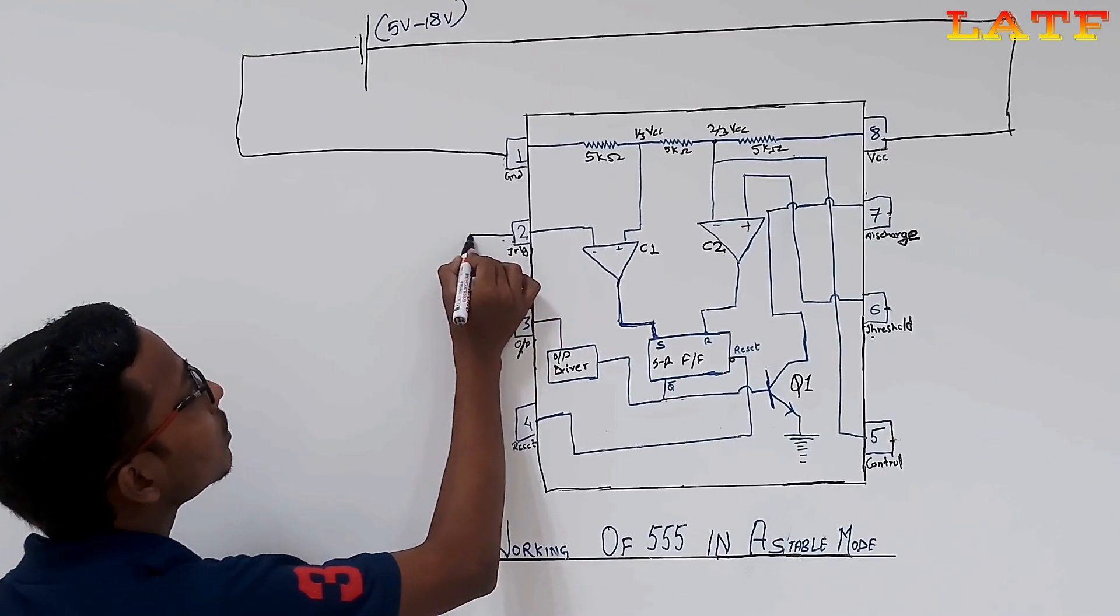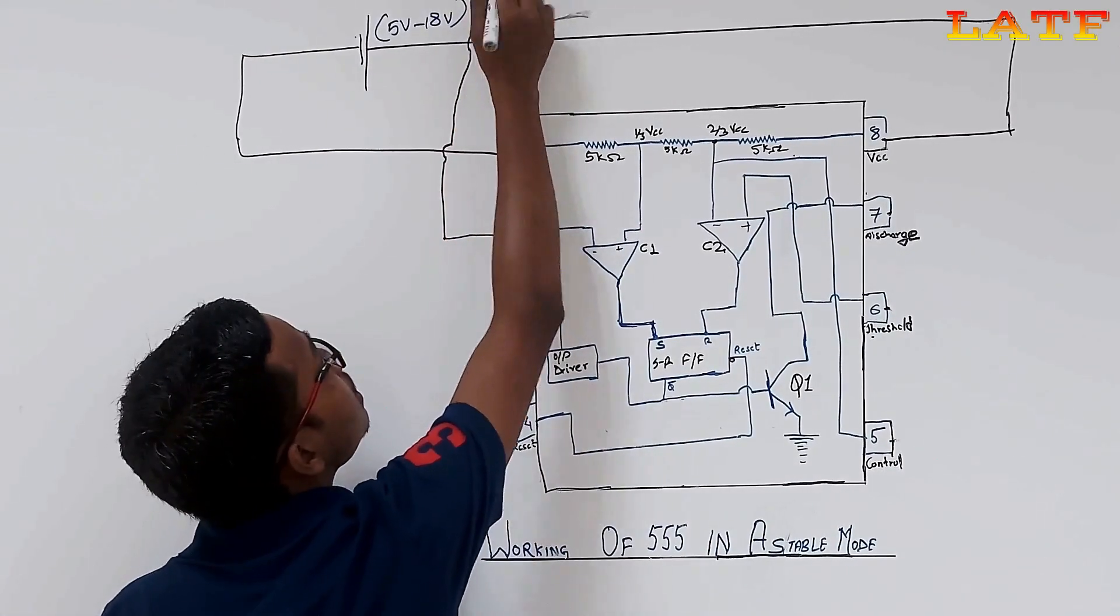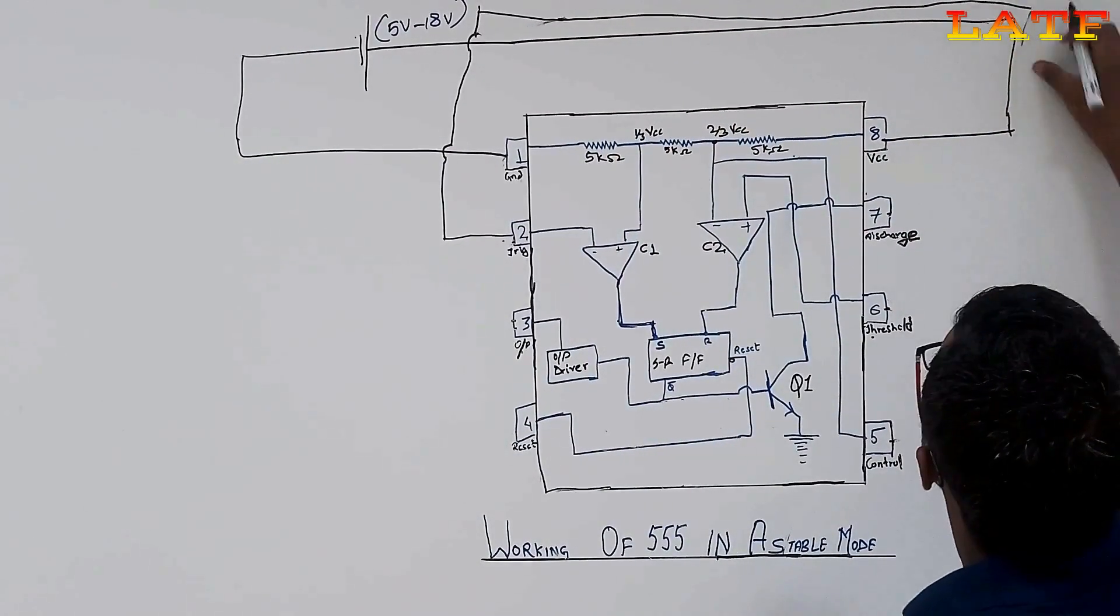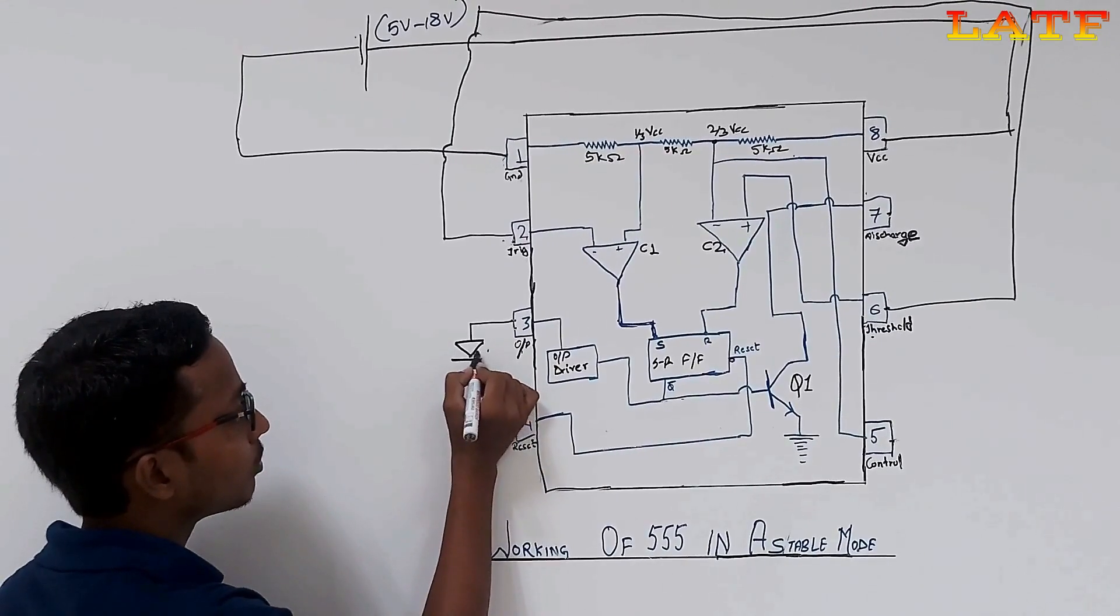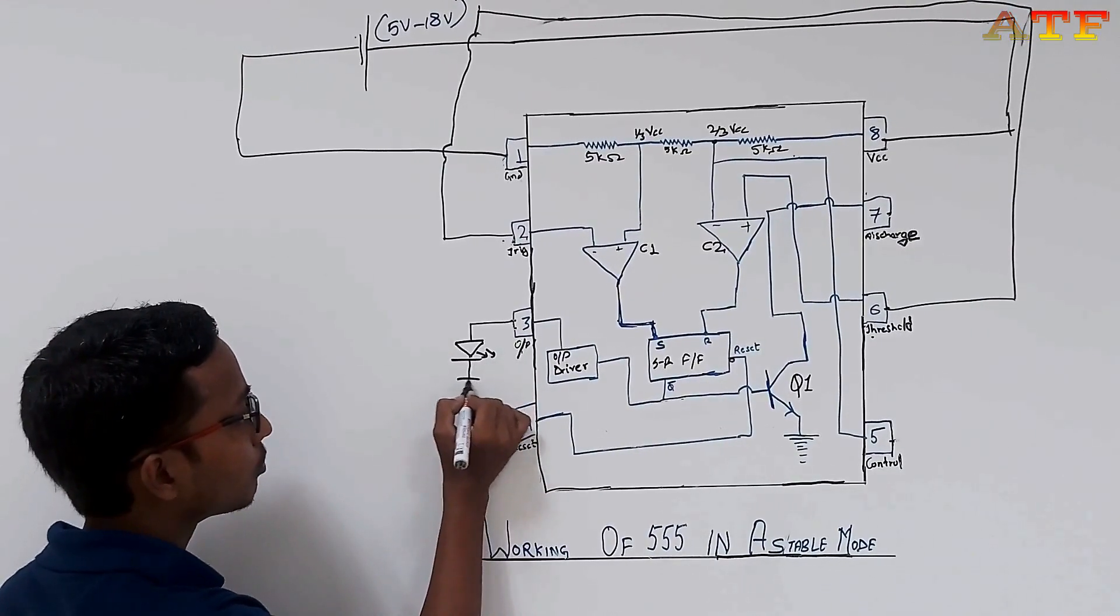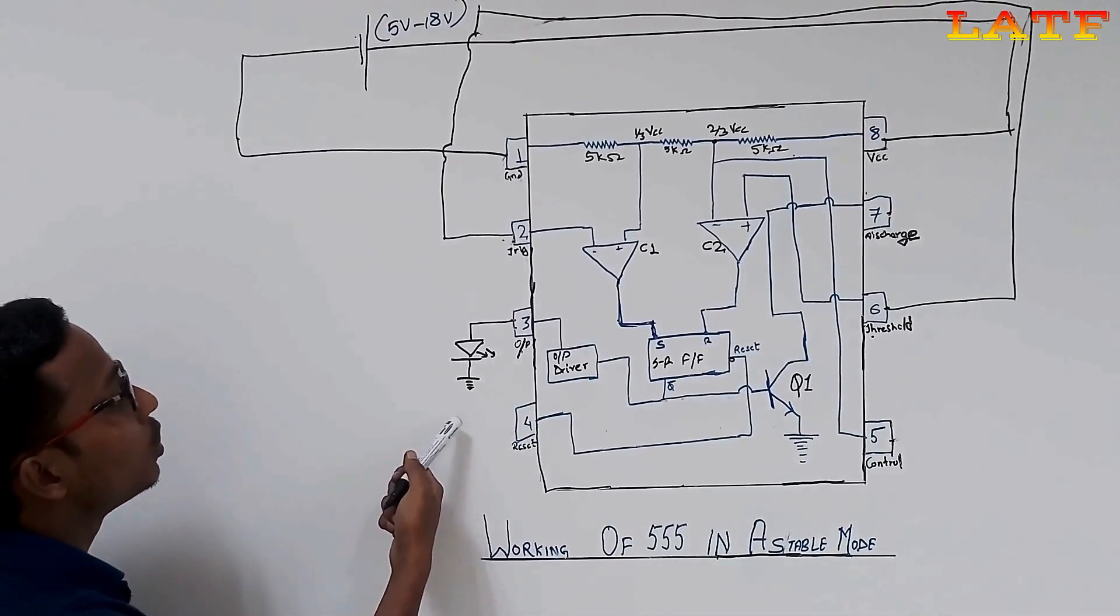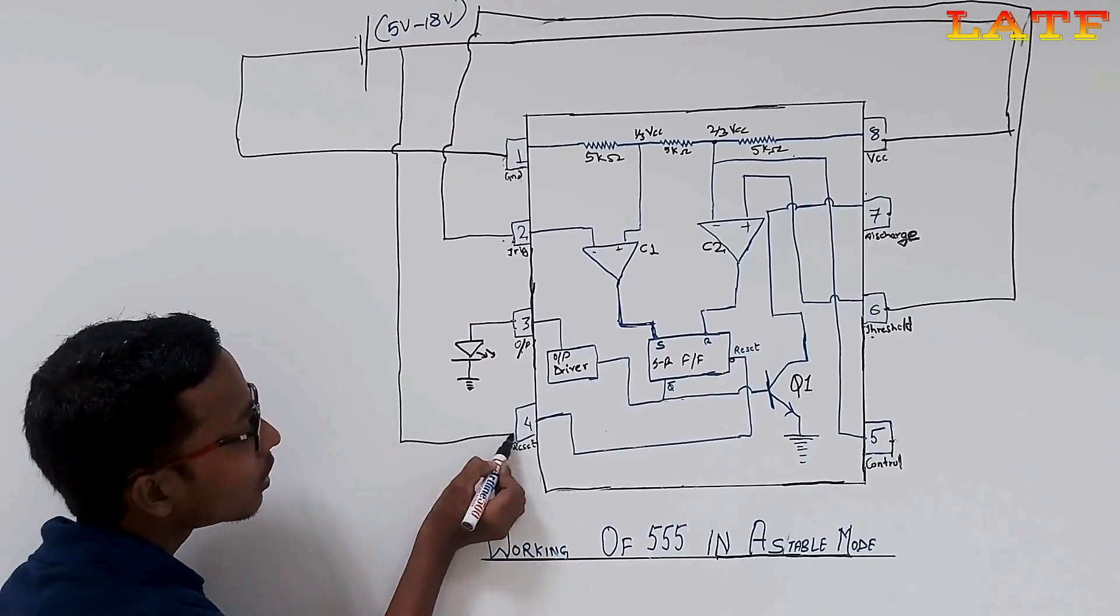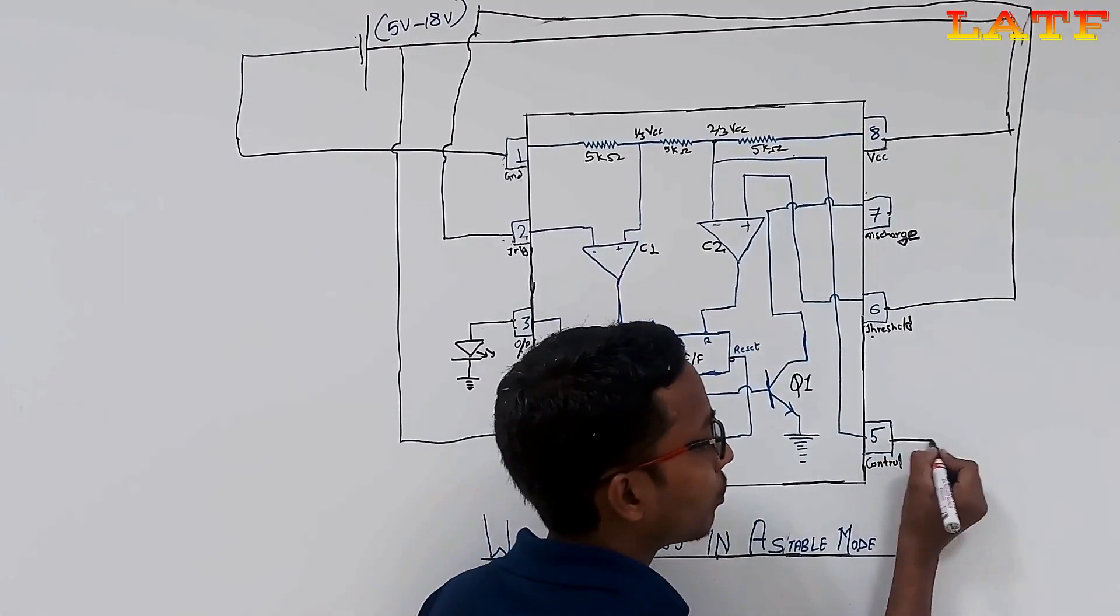Now, short pin number 2 and 6. Now, connect a LED to pin number 3 and ground. Now, connect pin number 4, i.e. reset pin of 555 to VCC. Connect a capacitor of 10 nF between pin number 5 and ground.